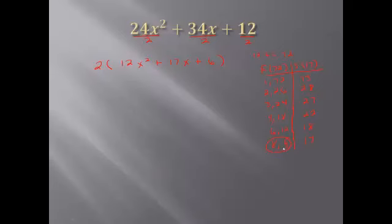This takes more steps than the last problem. We rewrite the expression and change the middle term, 17x, into our two factors: we split 17x into 8x plus 9x. This is called splitting the middle term.